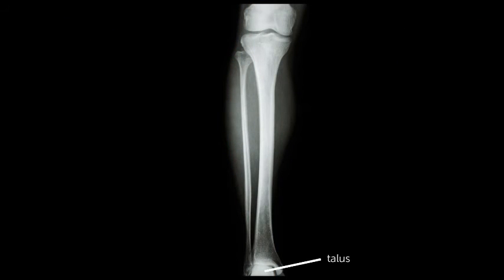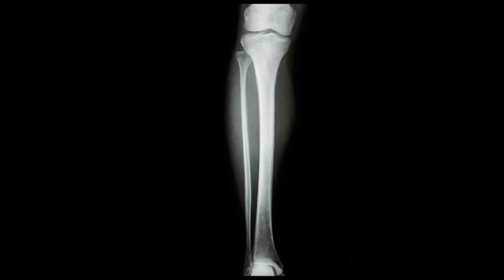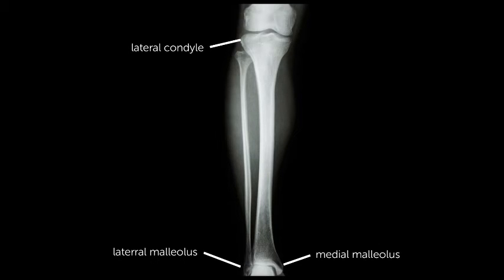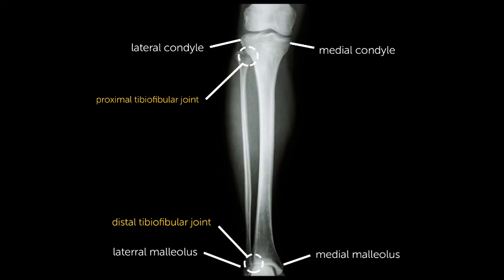General anatomy of the lower leg includes the talus, tibia, fibula, and femur. As we saw the malleolus at the distal end, we have condyles at the proximal end of the tibia. Also visible are the proximal and distal tibio-fibular joints.